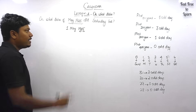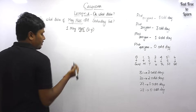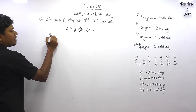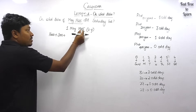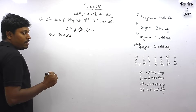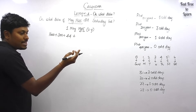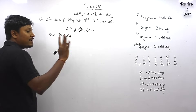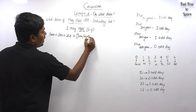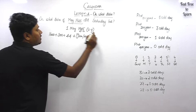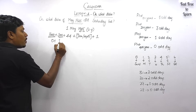First, find what day is 1st May 1945. Check whether the last two digits, 45, are divisible by four — they are not, so 1945 is an ordinary year. Next, write 1945 as 1600 plus 300 equals 1900, with remaining 45 years. The 45 years can be written as the first 44 years and the 45th year. Our target is 1st May, so before May we have January, February, March, and April.